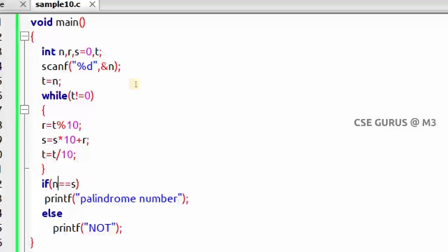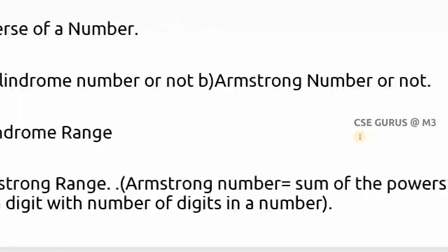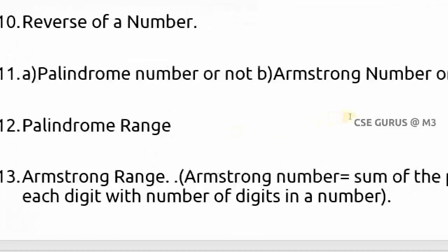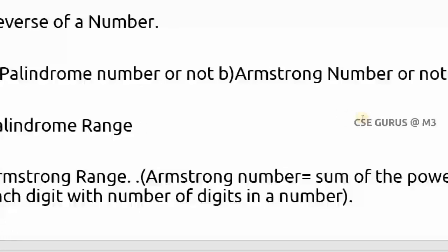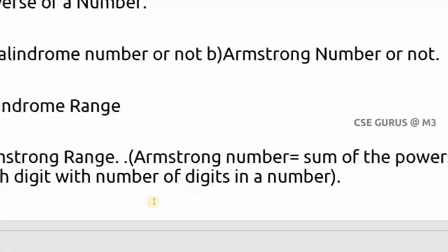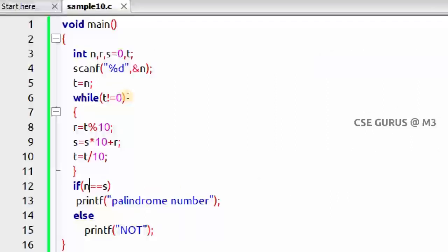We'll go to the next question: 11b, Armstrong or not. We first handle Armstrong before the palindrome range, because I want to connect the palindrome and Armstrong programs. A given number is Armstrong or not — this was also explained in a previous video on loops. Armstrong is defined in two ways: first, sum of the cubes; second, sum of the powers of the number of digits. We'll see what modifications to make to the palindrome program to get the Armstrong check.